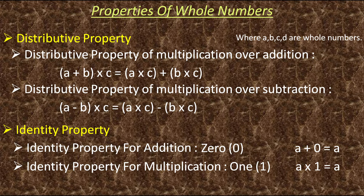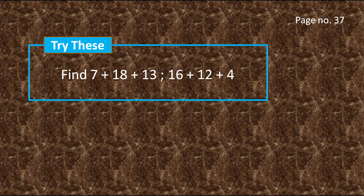Now let's solve sums. On page number 37, you have a box called 'Try This' — in that they have given two equations to solve with the help of properties. The important point to remember is to solve these kinds of equations, you need to recognize the combination of numbers which make a multiple of 10 when added.